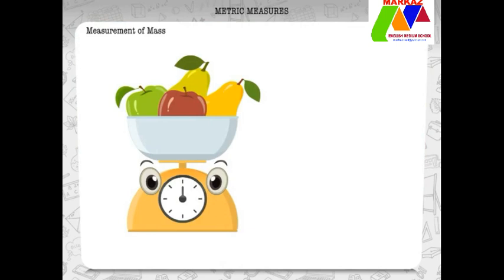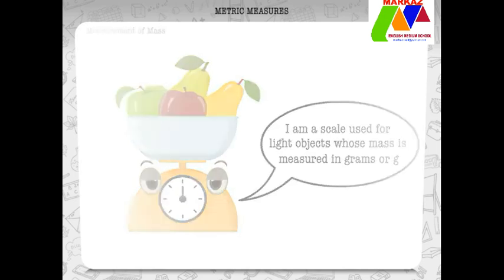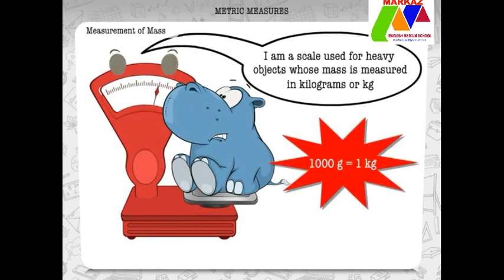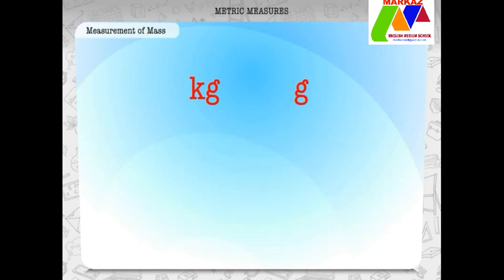Now, let us welcome the measurements of mass. I am a scale used for light objects whose mass is measured in grams or g. I am a scale used for heavy objects whose mass is measured in kilograms or kg. Can you find out which of these are measured in grams and which in kilograms?